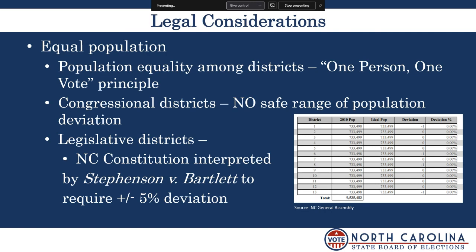One of the benchmark legal considerations for redistricting is equal population — the one person, one vote principle. There must be population equality among the districts. For congressional districts, there is no safe range of population deviation; in the 2011 redistricting plan using 2010 census data, the deviation was zero or one among the 13 U.S. congressional districts in North Carolina. Federal case law says there is really no safe range of population deviation for U.S. Congress. For state legislative districts, the North Carolina Constitution has been interpreted by the courts to require a plus or minus 5% deviation among those districts.